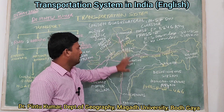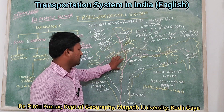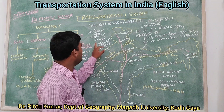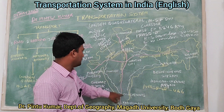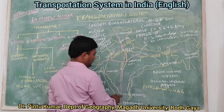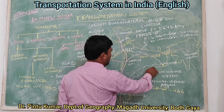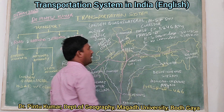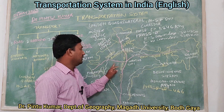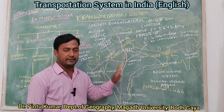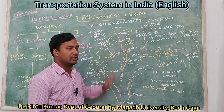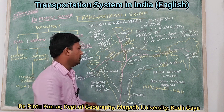Now I am going to talk about two important road networks in India. First is the Golden Quadrilateral road network system, and second is the corridors. The Golden Quadrilateral road network has a total length of 5,846 kilometers. It has been developed in three different phases, with the first phase especially linking the metropolitan cities.